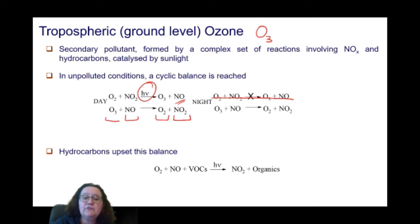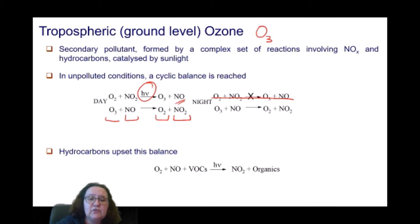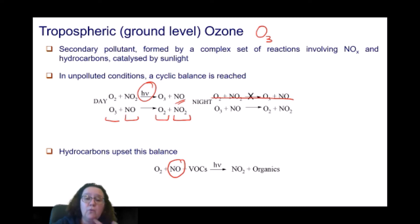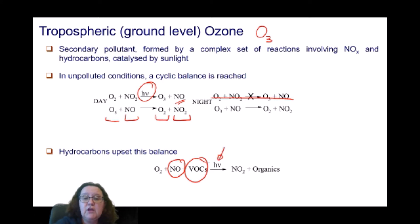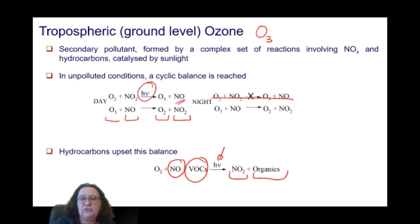When you have hydrocarbons from the incomplete combustion of petrol, there is an upset of this natural equilibrium, because you have an additional reaction that contributes to the formation of ozone. That is, oxygen can react with nitrogen monoxide — also released by incomplete combustion of petrol — and something we call VOCs, volatile organic compounds: those hydrocarbons that come from the incomplete combustion of petrol. This reaction is catalysed by sunlight to form nitrogen monoxide and a large array of species generally called organics.